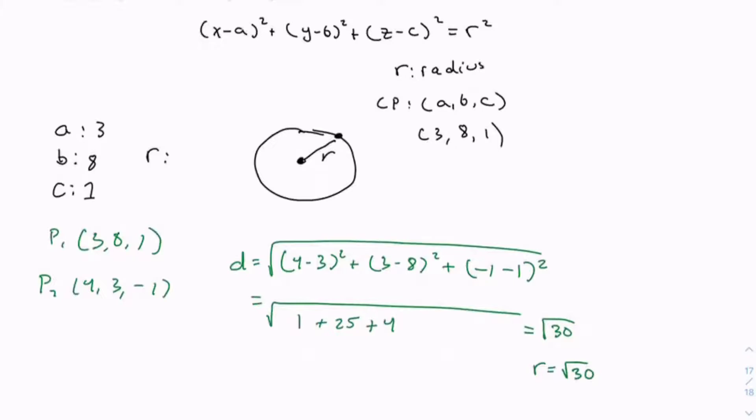Now that we have r, we can write the entire equation: (x-3)² + (y-8)² + (z-1)² = 30.